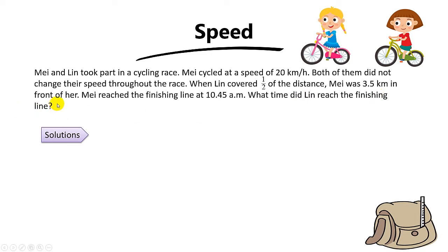Let's digest the question. We have two girls taking part in a cycling race. The speed of May is 20 km per hour. When Ling covered half of the distance, May was 3.5 km in front of her. From this statement, can you tell me who is faster — May or Ling? The answer is May, because May is 3.5 km ahead of Ling when Ling covered half of the distance.